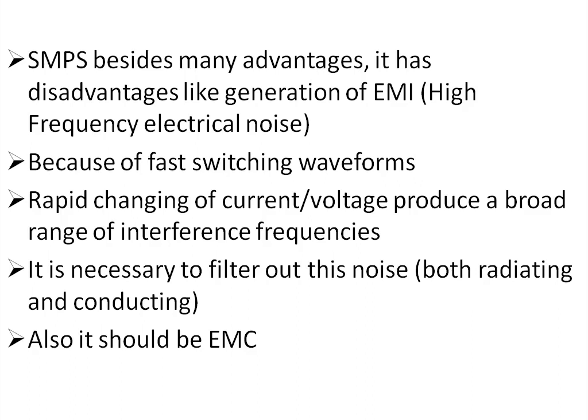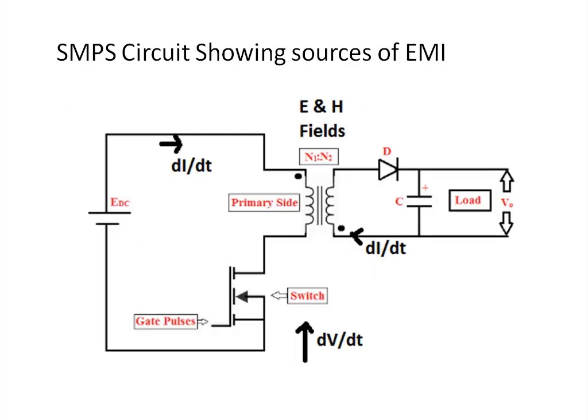Electromagnetic interference is generated because SMPS operates at very high frequency, and this rapid changing of current and voltage produces EMI. It is necessary to filter out this EMI — both radiated and conductive noise. In addition to reducing EMI, the device should also be EMC compliant — electromagnetic compatibility — meaning it should not be affected by any noise source generated by other external sources.